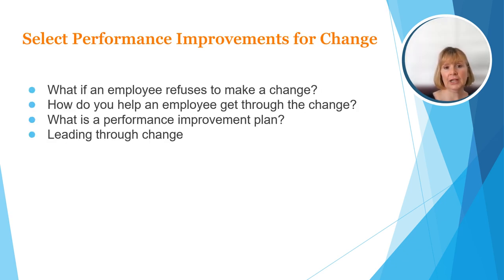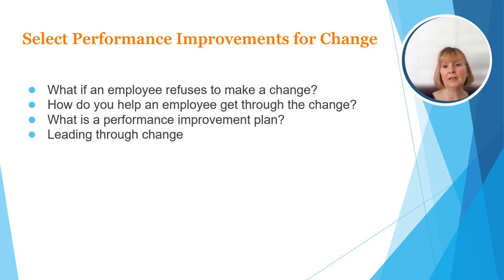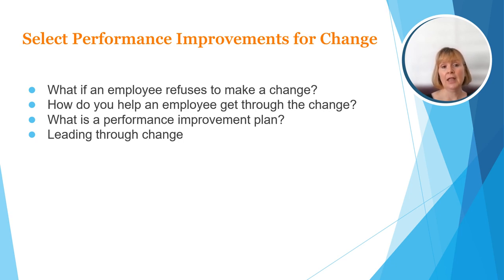Next, we'll look at selecting performance improvements for change. What can you do if an employee refuses to make necessary changes? If an employee refuses, it's really important to deal with that behavior quickly. It may only take a short conversation — ask a few questions about why the change isn't occurring, and maybe the employee will do a complete turnaround. Or if you've already had that conversation, it might now require a more in-depth meeting with a performance improvement plan. Typically you'll see a couple of verbal conversations first.